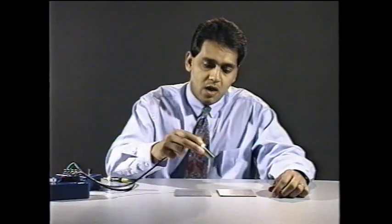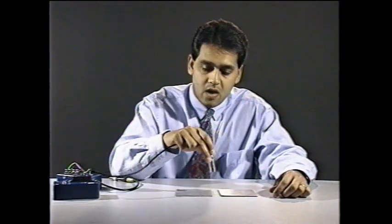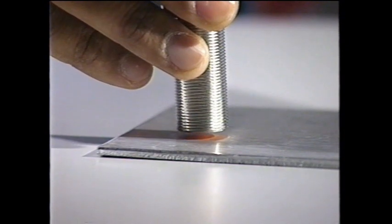The second point that affects the sensing range is the target material. So far, we've been using a piece of mild steel. Let's look at an aluminum target — same size, but just made out of aluminum. I'm going to use the 18-millimeter switch to illustrate the point. On mild steel, I'm getting five millimeters of range. On aluminum, you can see I'm getting considerably less range. The correction factor for aluminum is 0.4. Therefore, my working range is 0.4 times 5 millimeters. Anytime you're working with a material other than mild steel, always use a correction factor. The correction factors are listed in the training manual and also in the Effector sensor catalog.